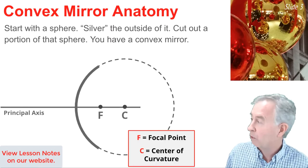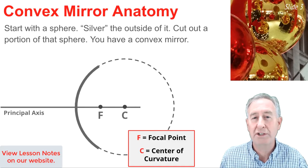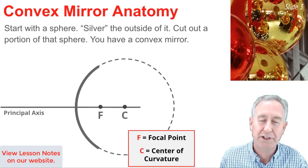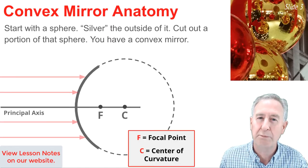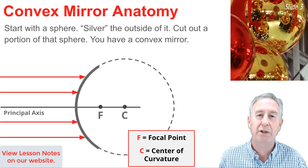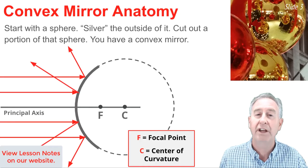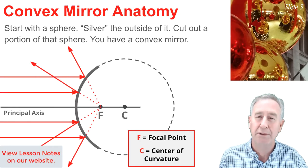The F point, or focal point, is the midpoint between the center of curvature and the mirror's surface. The focal point has some special meaning. Rays of light traveling parallel to the principal axis will reflect off the mirror and reflect in line with the focal point.